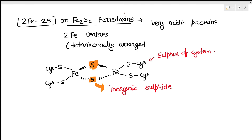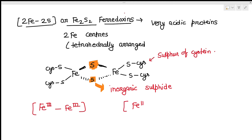There are two redox states of Fe2S2 proteins. One is the Fe3+/Fe3+ state — the oxidized state — and the second is the Fe3+/Fe2+ state — the reduced state. Ferredoxin shuttles between these two states. In the oxidized state, the two iron atoms are anti-ferromagnetically coupled.